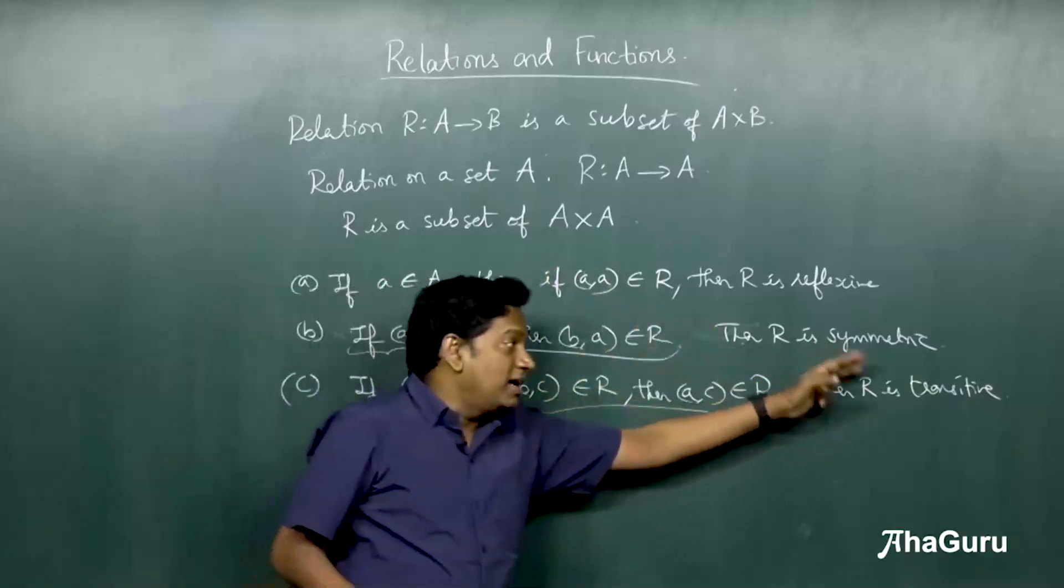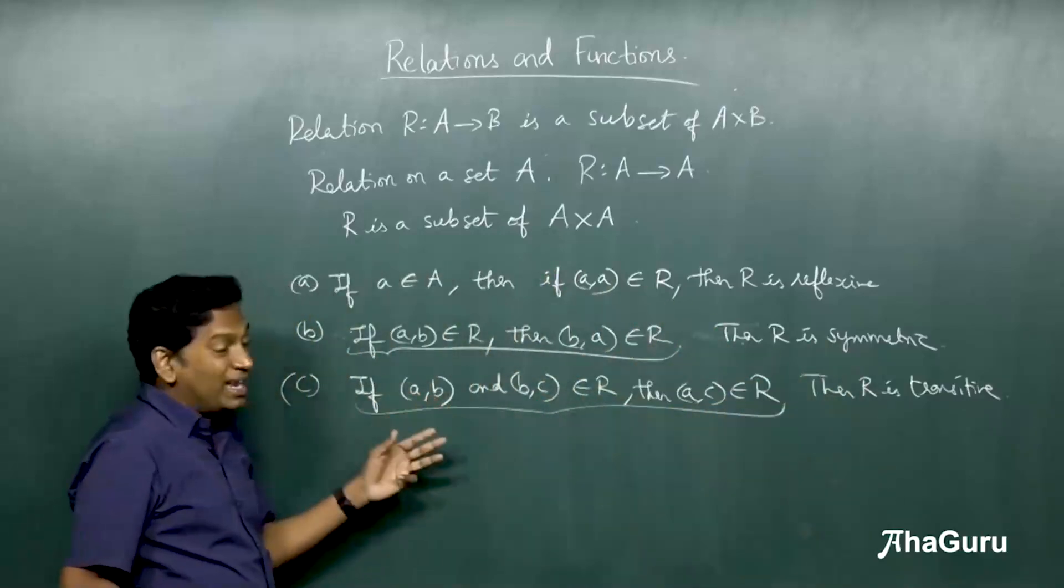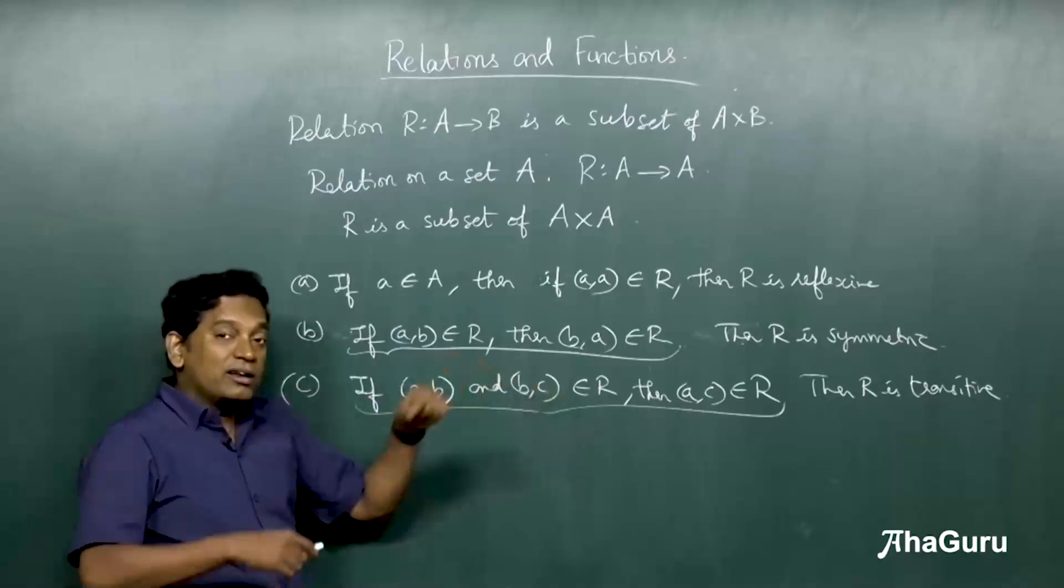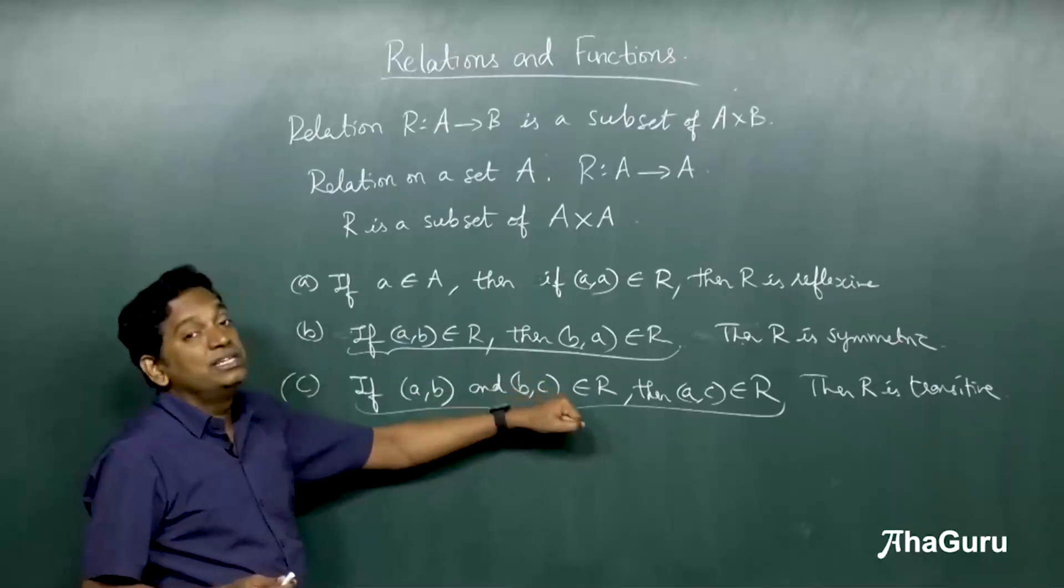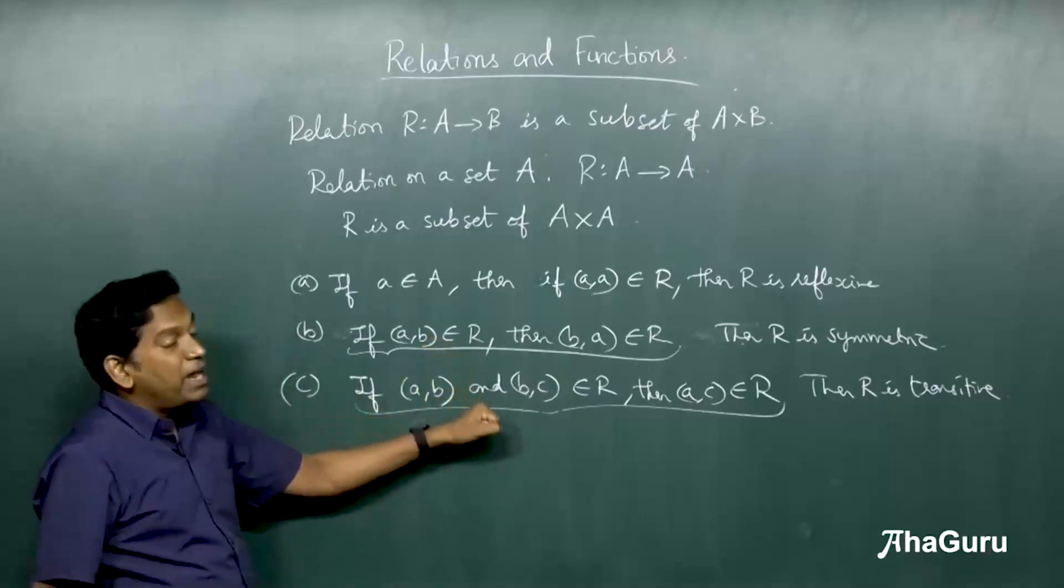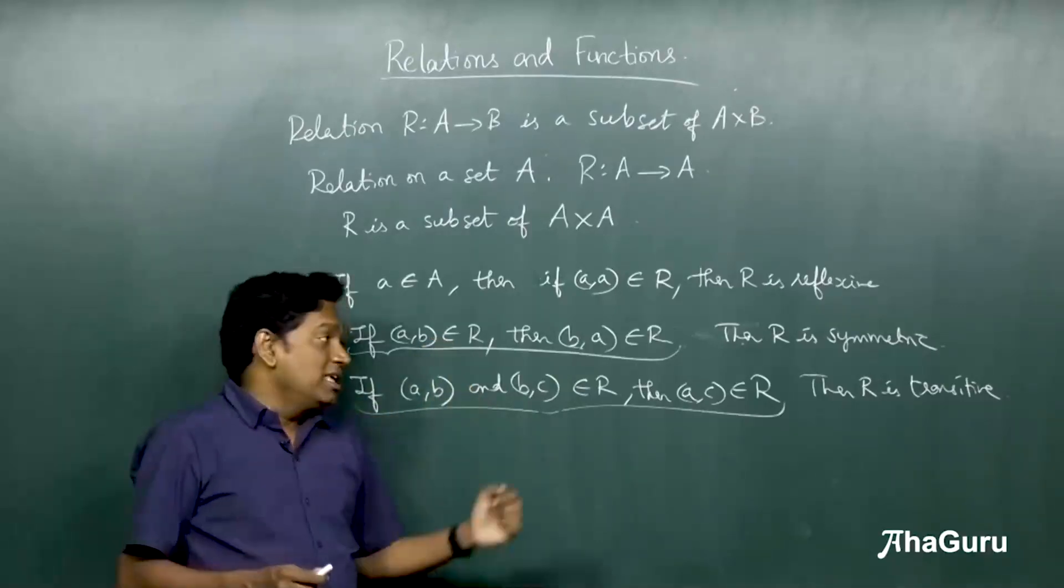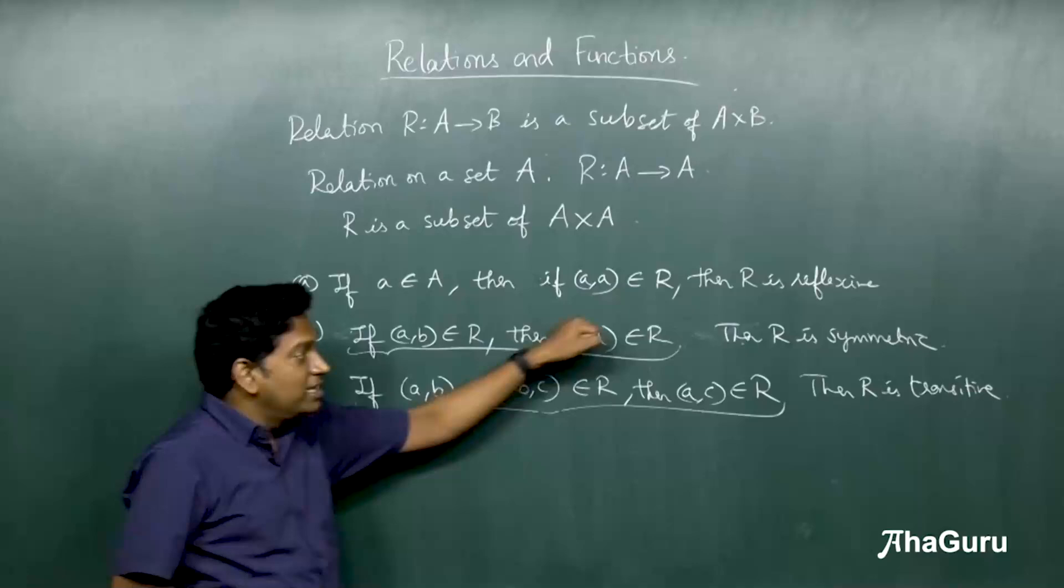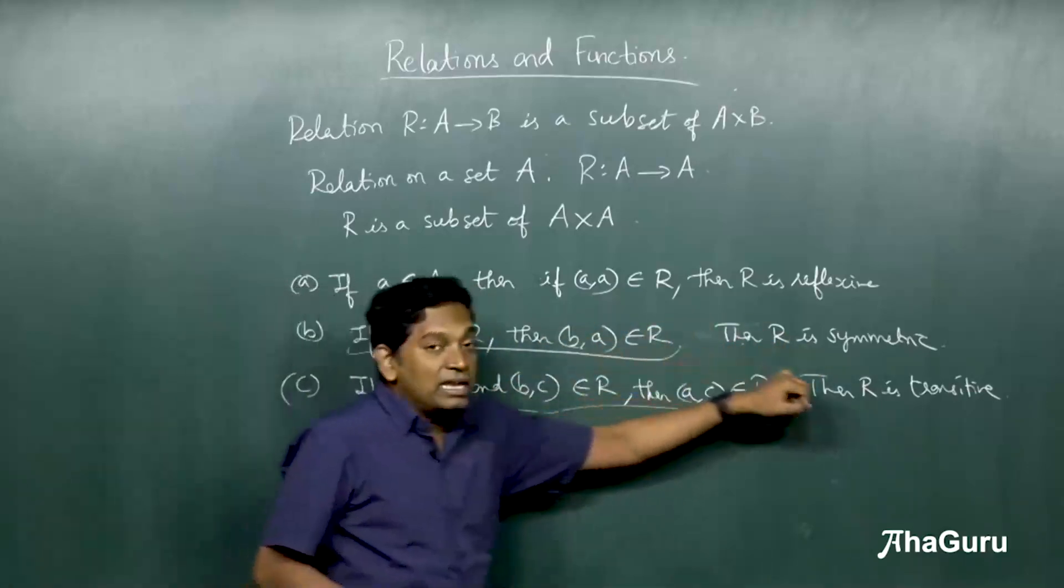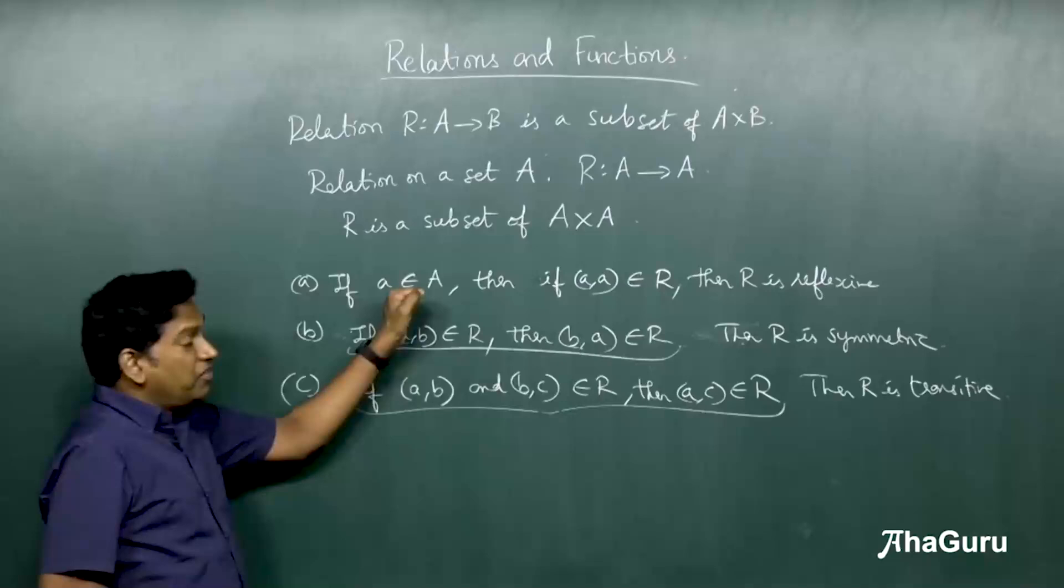What is a transitive relation? A transitive relation is one where this condition is satisfied. Or, a better way to understand is where this condition is never violated. In fact, part B and part C, we have to look at it as violation. If the condition is violated, then R is not symmetric. If the condition is violated, then R is not transitive.